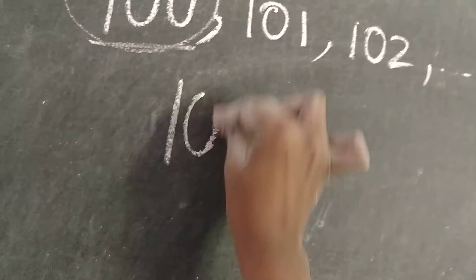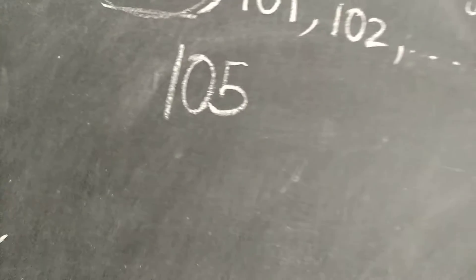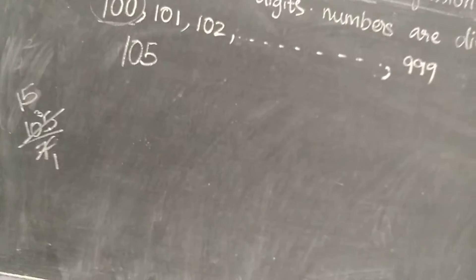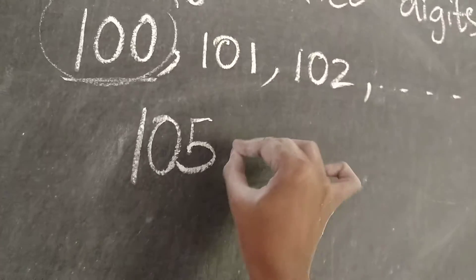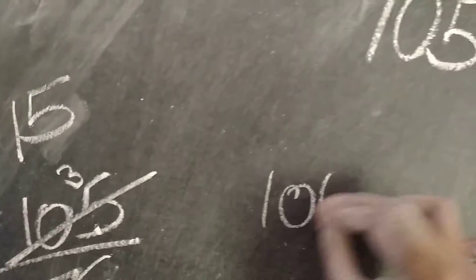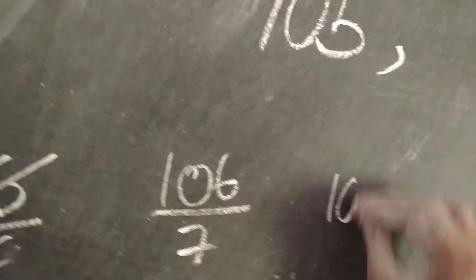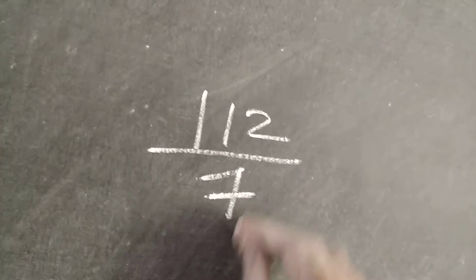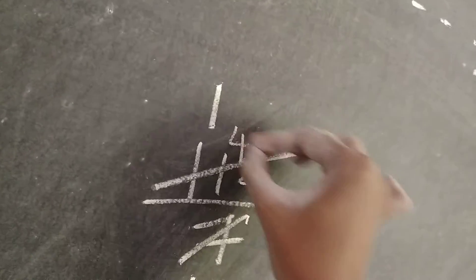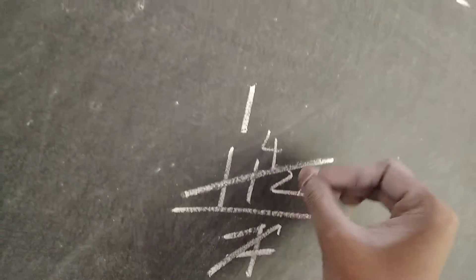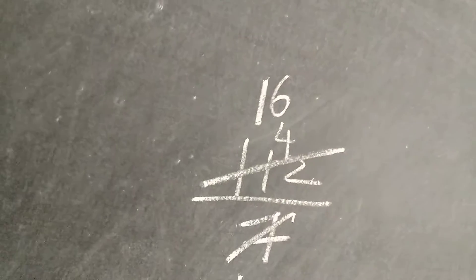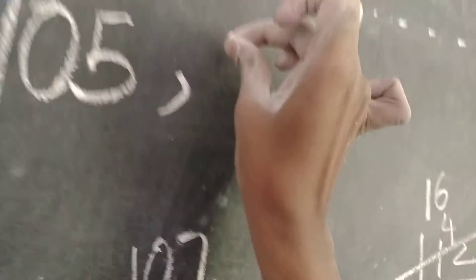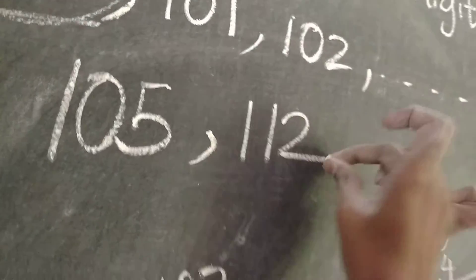So the first 3-digit number divisible by 7 is 105. Then what will be the second 3-digit number divisible by 7? Check 106, 107, 108, 109 — none work. Check 112 divided by 7: 7 ones are 7, again 7 ones are 7, carry 4, we have 42, and 7 sixes are 42. So the second 3-digit number divisible by 7 is 112.